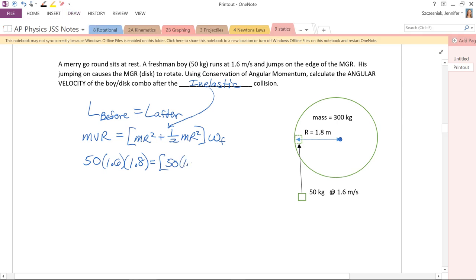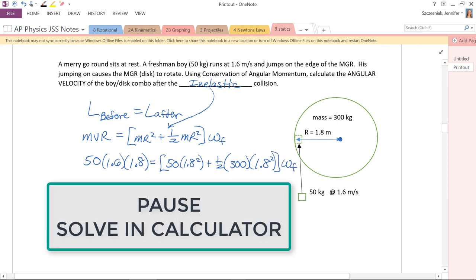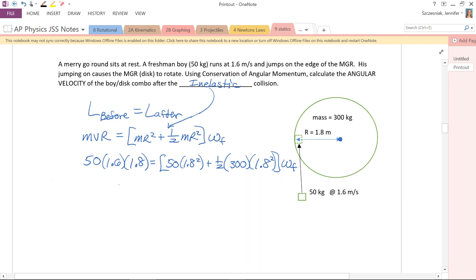So let's say, 1.8 squared, plus 1.8 squared, plus 1.8 squared, omega final. So use your calculator, you get 144 equals 648 omega final.